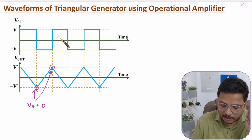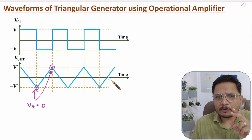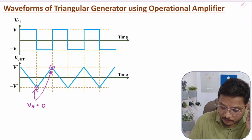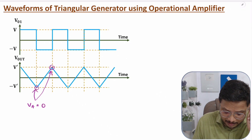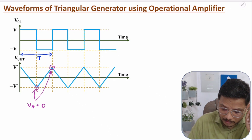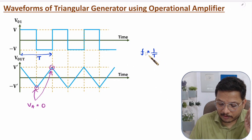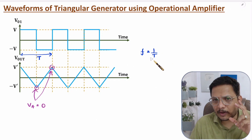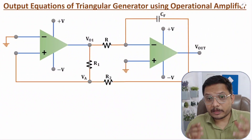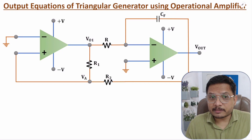Now, based on these waveforms, we will derive the frequency. Frequency is based on the time period T, and frequency equals 1/T. To derive the frequency equation, I will be considering node VA.